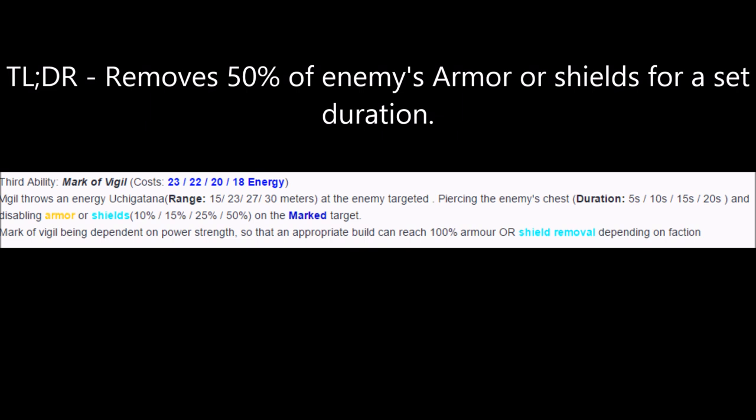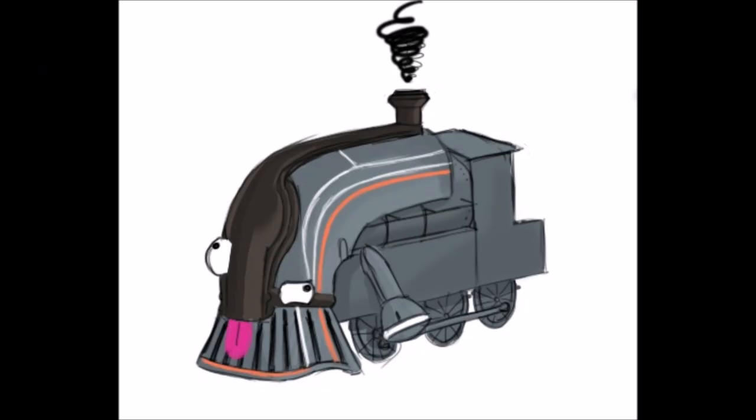Vigil's Ethereal Blades becomes Mark of Vigil, an ability that allows Vigil to target an enemy and remove 50% of their armor or shields, depending on the enemy. The debuff will apply for 20 seconds, and because of its decent range, it can make for a nice ranged supportive power.